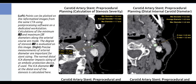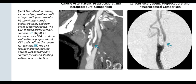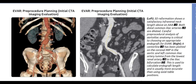The normal distal ICA diameter impacts sizing of an embolic protection device if used; the ICA diameter at the distal end of the stenosis is calculated. The patient was being evaluated for possible carotid artery stenting because of a history of prior carotid endarterectomy and new onset of slurred speech. The CTA shows a severe left ICA stenosis. Intraoperative DSA correlates well with the pre-procedural CTA and confirms the severe ICA stenosis, indicating the patient was anatomically suitable for carotid stenting with embolic protection.